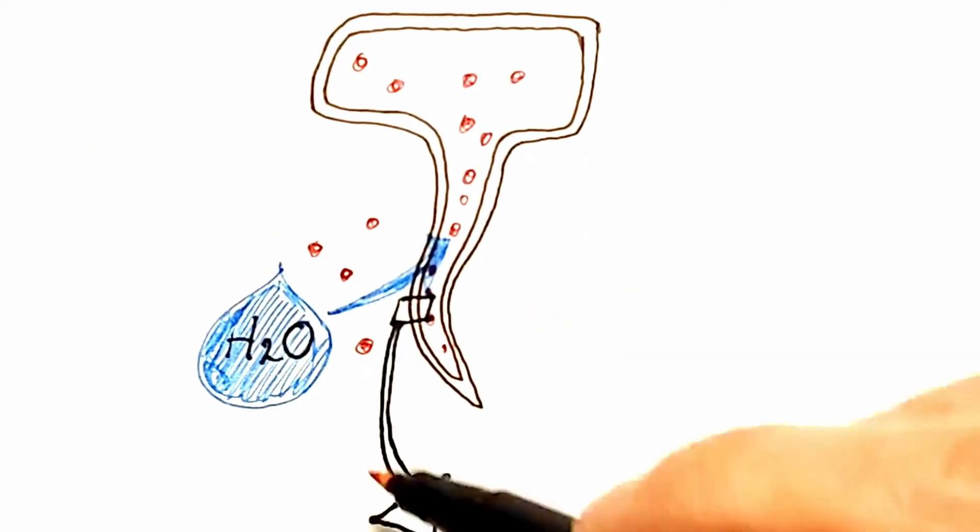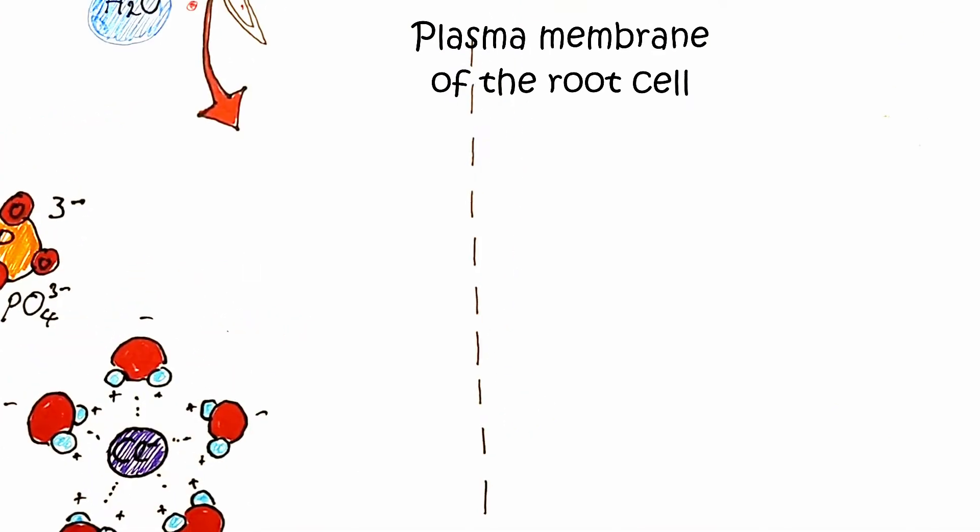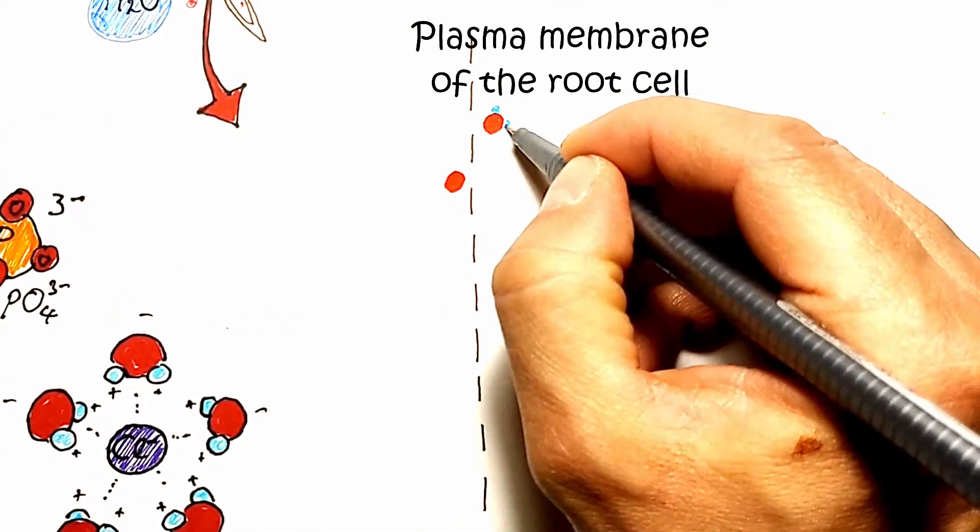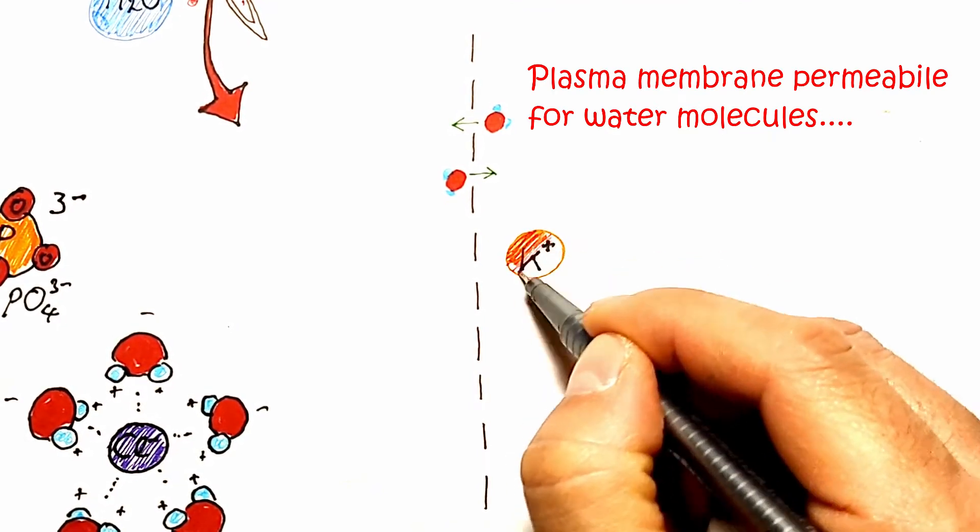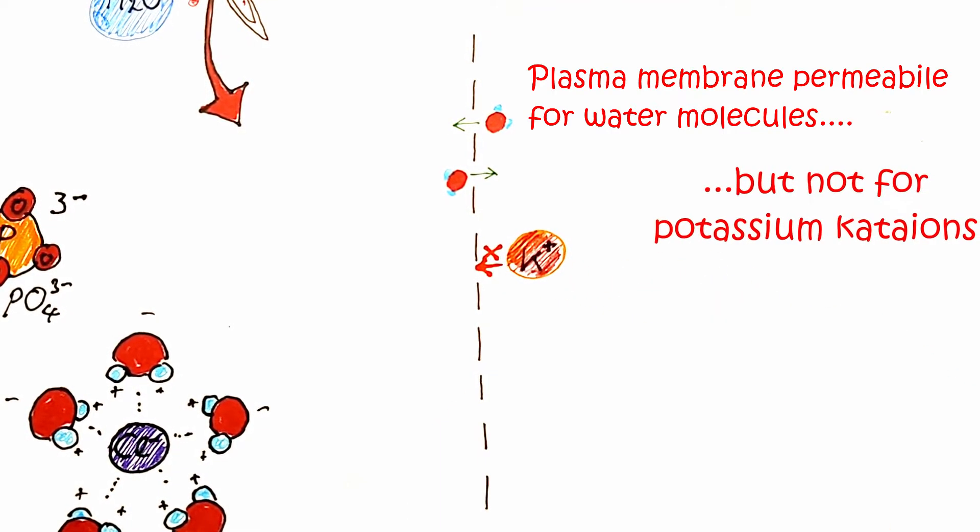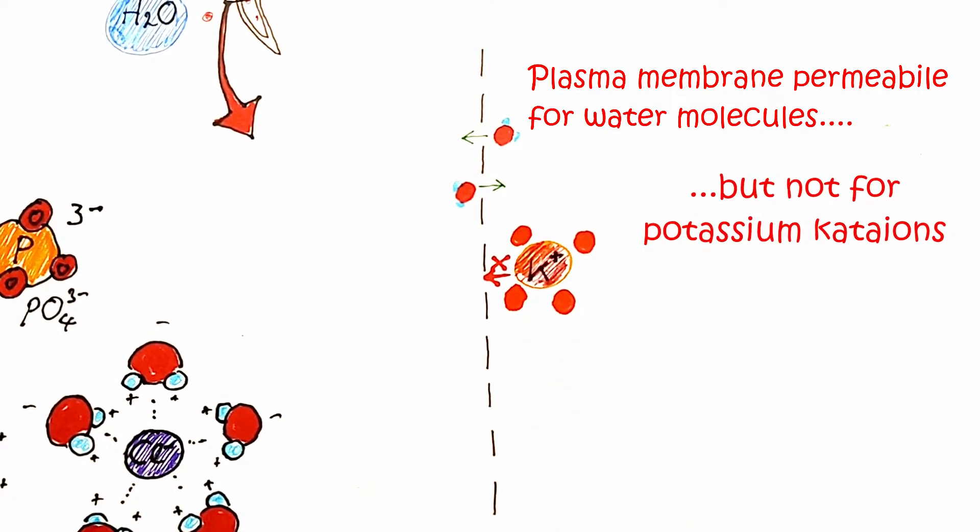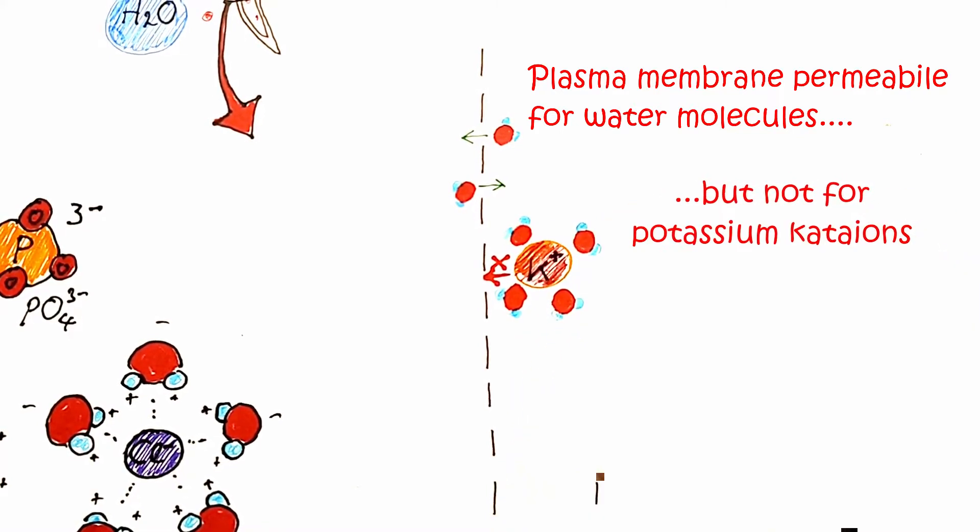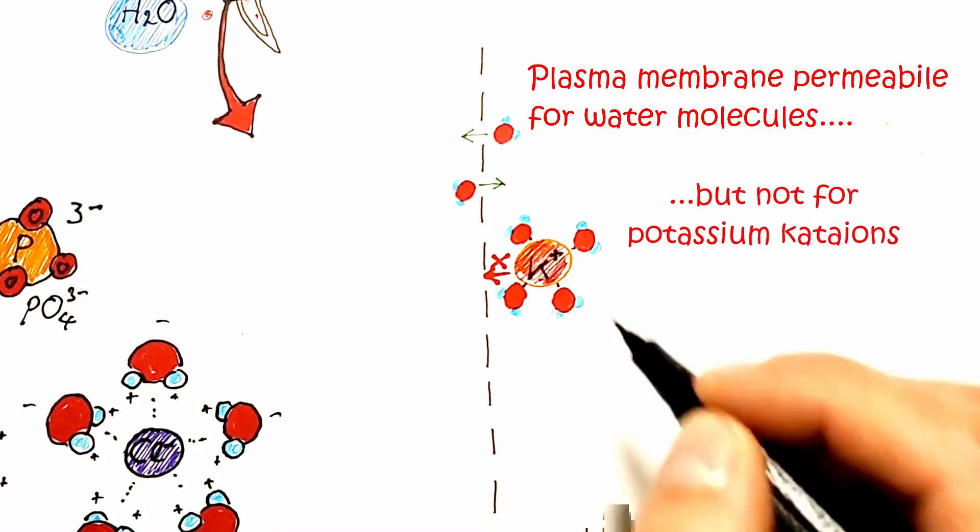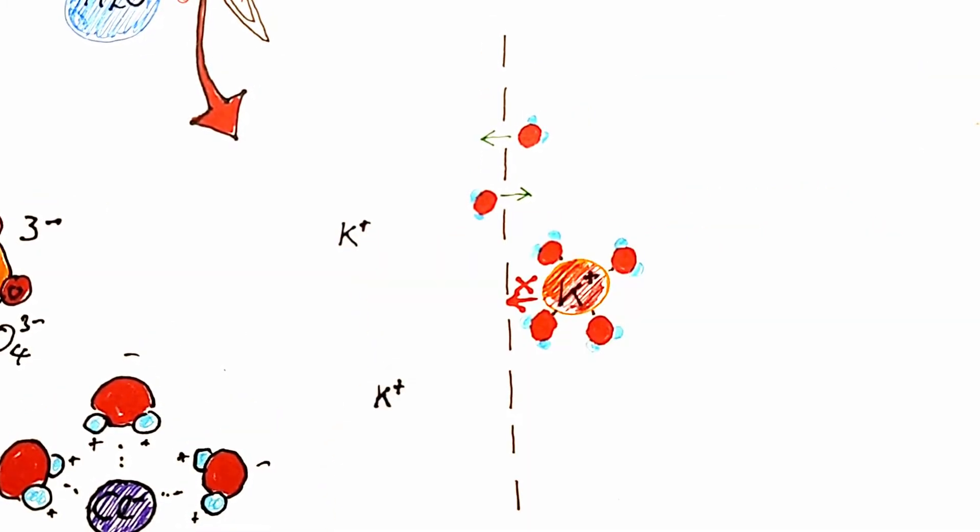If we enlarge the part of the epidermal cell membrane where osmosis takes place, we can see that the plasma membrane is semipermeable, which means that water can pass through it, but not the ionic minerals dissolved in it. The illustration shows potassium ions, which attract water molecules and form hydrogen bonds with them. In this way, the bound water molecules become inaccessible for transport across the membrane.